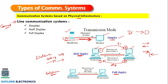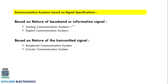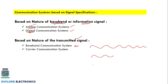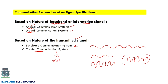Next, we have analog communication systems and digital communication systems. If the information being sent is of analog type, it is called analog communication; if it is digital type, it is called digital communication. Based on the nature of the transmitted signal: if the baseband signal is transmitted as-is without modulation, it is called baseband communication. If the baseband signal is modulated with a high frequency carrier, it is called carrier communication, which uses a modulation technique at the transmitter.